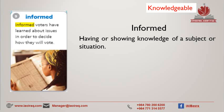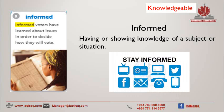The next word is informed. Informed voters have learned about issues in order to decide how they will vote. Informed: having or showing knowledge of a subject or situation. When you're voting for someone to be president or run the country, you want to know if they're good or bad, what they've done, and how they can help. So you want to be well informed. The synonym is knowledgeable.